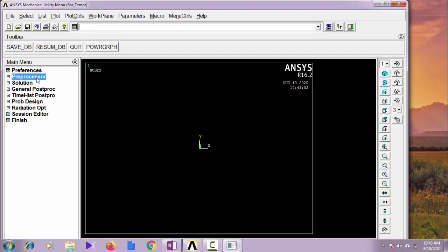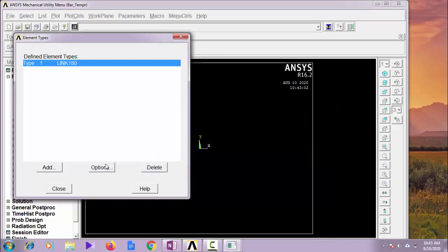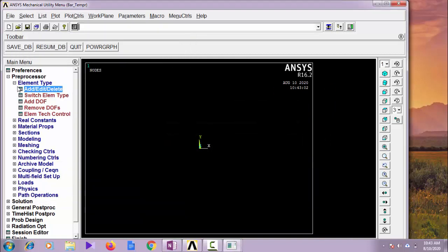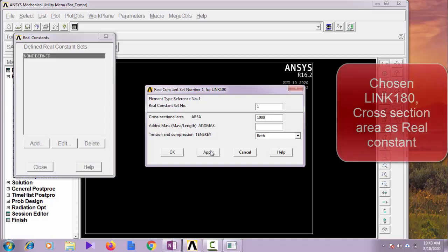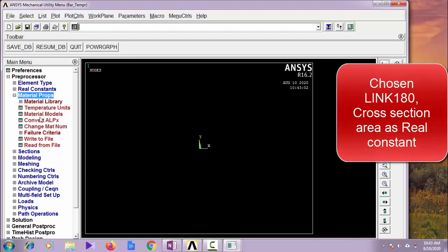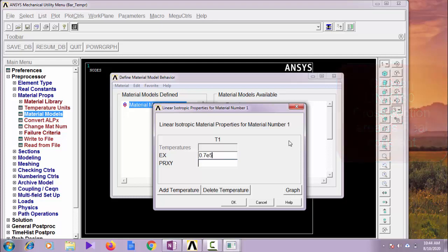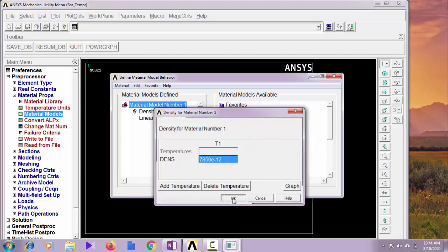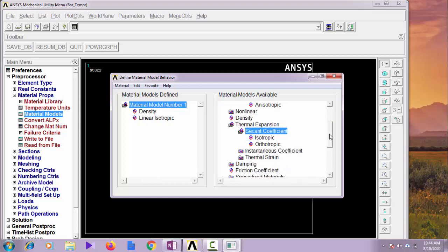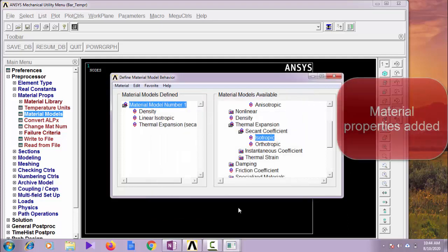The first thing is I am going to add a Link element, Link 180. So no need of changing any options here. Add the area. The first element area is 1000, apply. And the second real constant is 1500, that is the area of cross-section of bar 2. Material property. Let us choose aluminum: 0.7 x 10^5 N/mm^2 and 0.33. And density 7850 x 10^-12. And thermal expansion coefficient 23 x 10^-6.